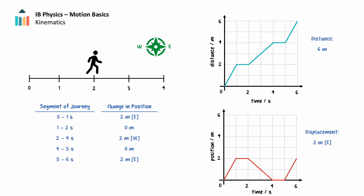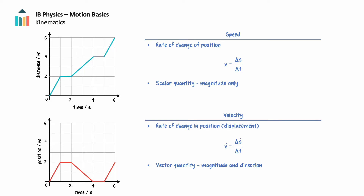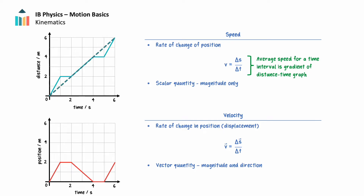We can use position-time and distance-time graphs to consider how we define and determine an object's speed and velocity during motion. Speed is the rate of change of position. We can express average speed as the change in distance over the change in time. Because speed is calculated from a scalar quantity, distance, speed is also scalar and has only magnitude. The average speed of an object in a time interval is the total distance traveled over the total time. This is the gradient of a line connecting the initial position to the final position on our distance-time graph, shown by the dashed line. The speed of any one segment is the gradient for that segment and may differ from the average speed. During the first second of motion, the gradient is steeper than the average speed gradient, so the object's speed in that segment is greater than the average speed.